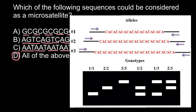We only see one band, so this person is homozygous for allele number 2, and another person is homozygous for allele number 3. But different variants are also possible — another person may inherit allele number 1 from one parent and allele number 2 from the other, making them heterozygous. Yet another may inherit allele 1 and 3, or allele 2 and 3.